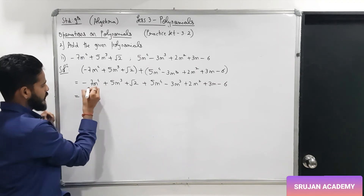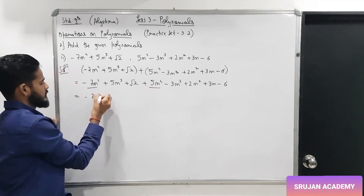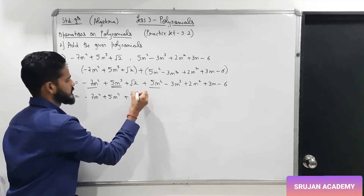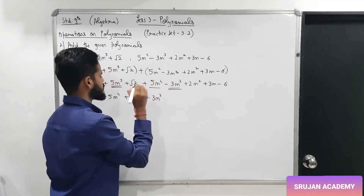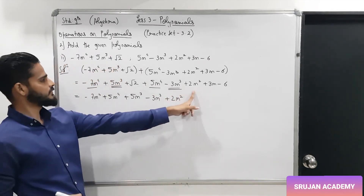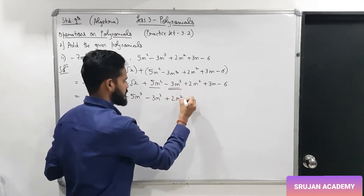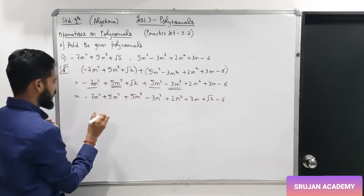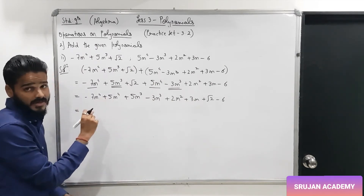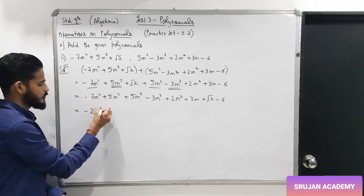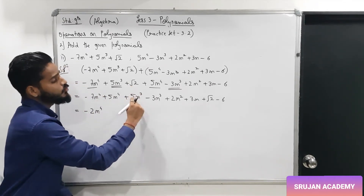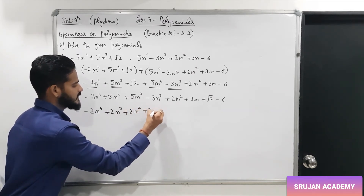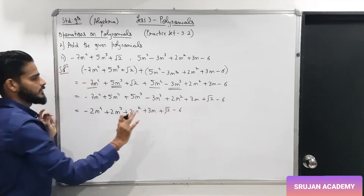For m⁴: −7m⁴ + 5m⁴ = −2m⁴. For m³: 5m³ − 3m³ = +2m³. Then +2m² is the only m² term. Then +3m is the only m term. For constants: √2 − 6. So the final answer is −2m⁴ + 2m³ + 2m² + 3m + (√2 − 6).